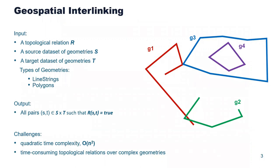More formally, spatial interlinking is defined as follows. Given as input the topological relation R, along with the source and the target dataset of geometries, the goal is to find all pairs of geometries that satisfy the given relation R. These geometries can be of two types: either line strings, as denoted here with red and green, or polygons, as shown here in blue and purple.